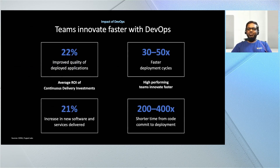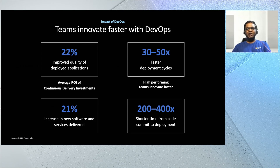Why continuous delivery or DevOps? Quality, speed, and efficiency are all tangible benefits of effectively implemented DevOps that lead to faster innovation and product differentiation. We have seen customers practicing continuous delivery and improving their efficiency significantly — 22 percent improved quality of deployed applications, 30 to 50x faster deployment cycles, and code going from commit to deployment 200 to 400 times more frequently, increasing new software and services delivered to customers.